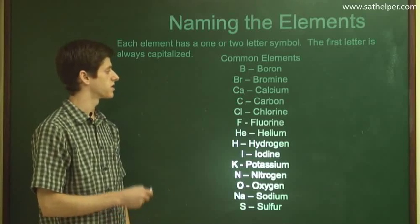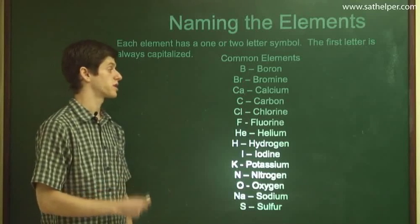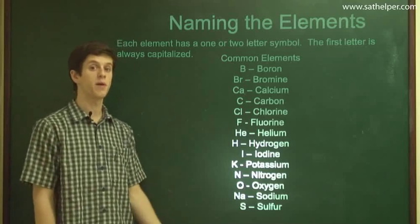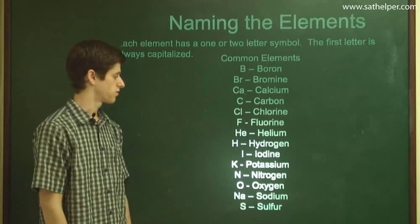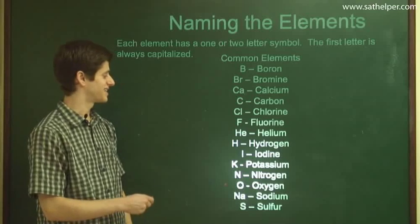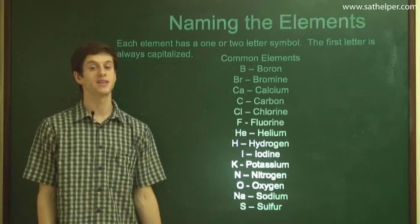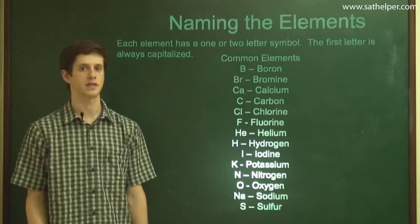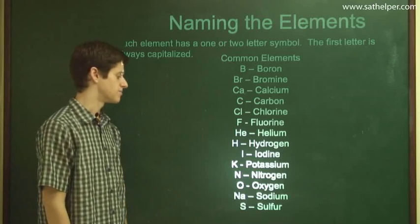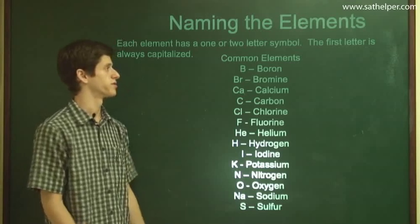As you can see here, most of these, fortunately, their symbols correspond to their names rather well, right? Iodine is I. But as you can see here, potassium has the symbol K. Unfortunately, not all the symbols correspond perfectly to the names and necessitates a little more memorization.